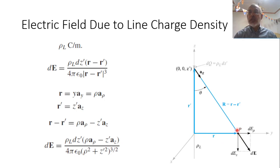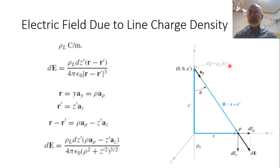We are required to find the total electric field at the point P away from an infinite line charge. This infinite line charge extends along the Z axis from minus infinity to infinity. To obtain the electric field, we start with an incremental length ΔZ′, which includes an incremental charge ΔQ equal to the line charge density ρL times the incremental length ΔZ′.